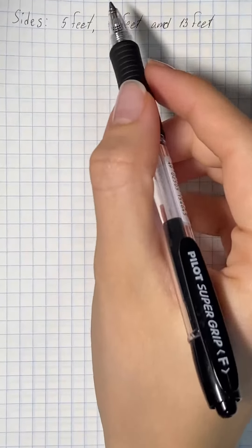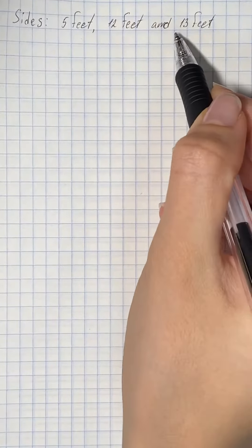The length of sides of triangle is given as 5 feet, 12 feet, and 13 feet.